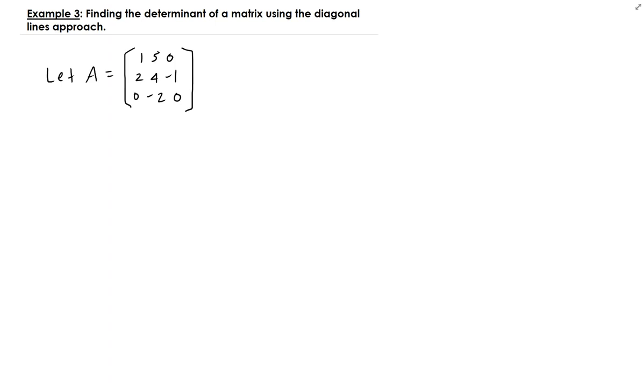In this lesson we're going to find the determinant of the following matrix using a different approach from the cofactor expansion. This approach I call the diagonal line approach and you will see why I call it that later.